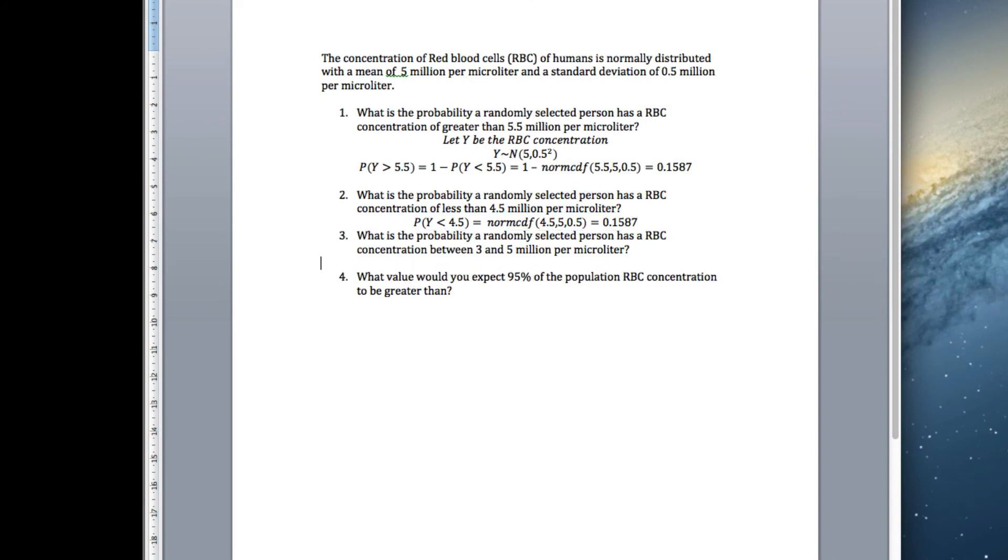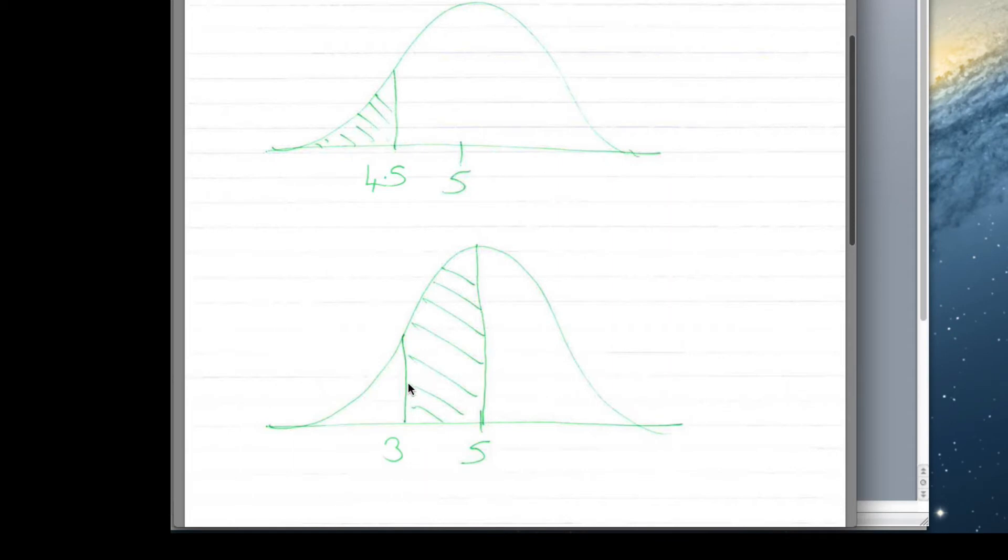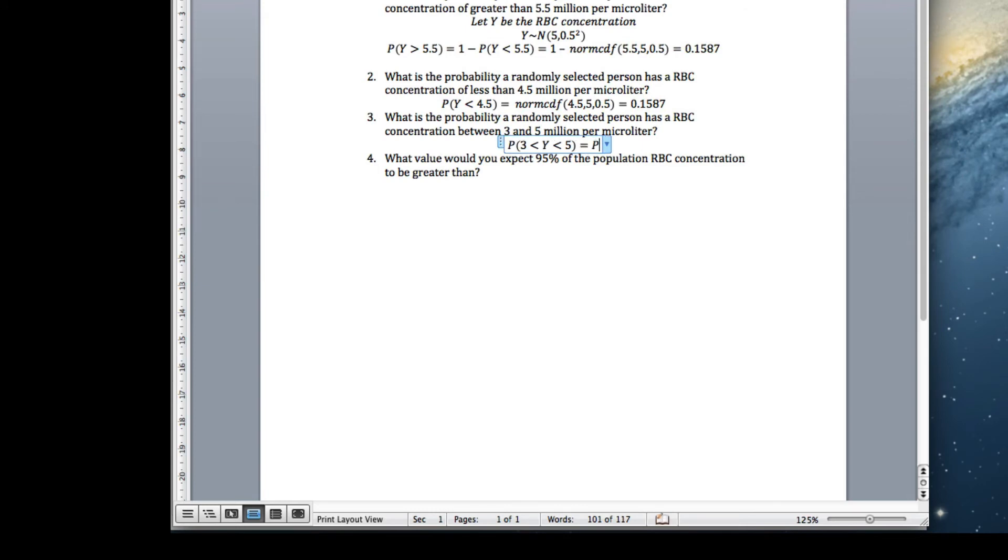We want a randomly selected person with red blood cell concentration between 5 million and 3 million. We want the probability that 3 is less than Y, which is less than 5. Let's have a look at the diagram of this. Here's my diagram. I've got 5 and 3, and I want this area here that's been shaded. You can't do this directly in MATLAB, but what you can do is you can say, what's the area to the left of 5? What is the area to the left of 3? When I take the small area from the big area, I get the area that's left over.